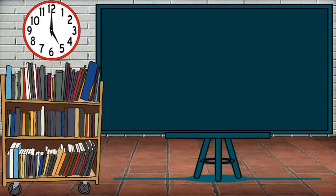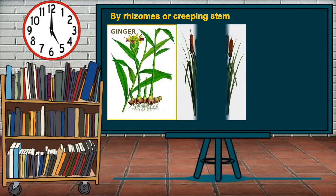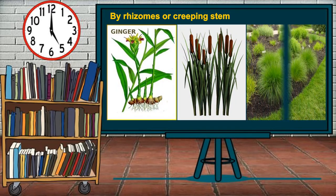Another example is plants that grow by rhizomes or creeping stem — a thick woody underground stem. In this method, the individual plant grows as the older part of the rhizome dies. Examples are ginger, cattails, and other grasses.